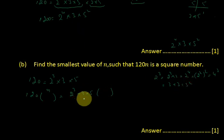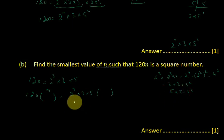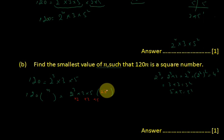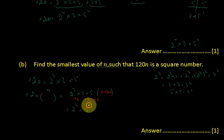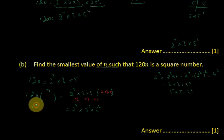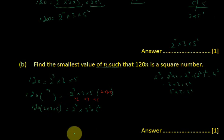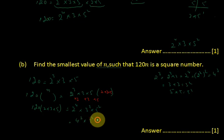Here we multiply by 2, then by 3, and also by 5. So the multiplier is 2 multiplied by 3 multiplied by 5. This will make 2 to the power 4, 3 squared, and 5 squared when you multiply by this number. So 120 multiplied by 2 multiplied by 3 multiplied by 5.